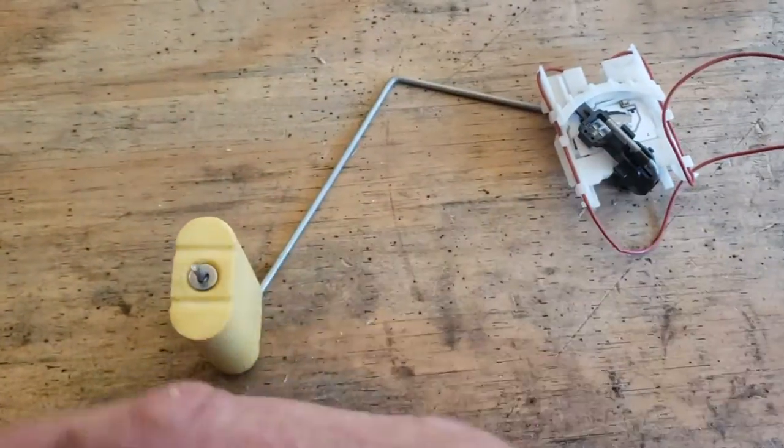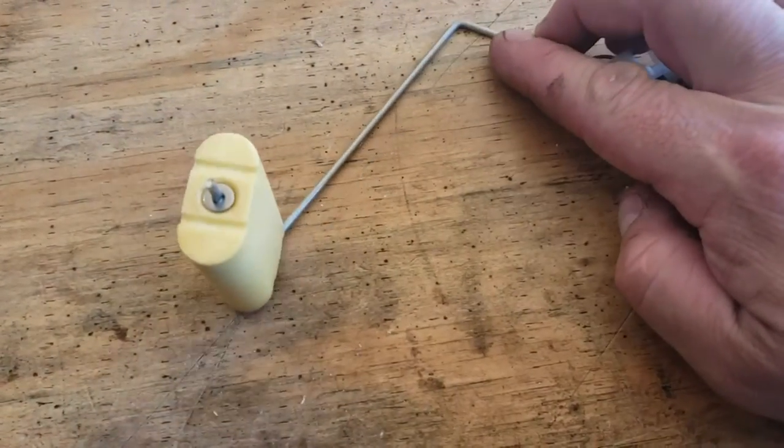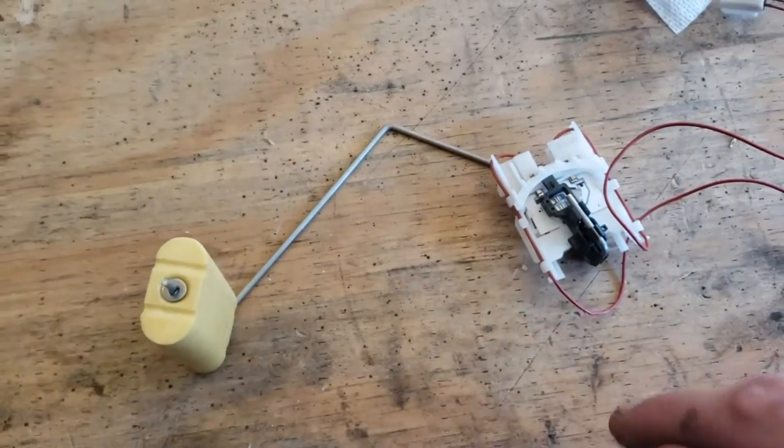But if this is rotated 90 degrees, which could easily happen with the fuel sloshing back and forth, this arm is going to be slightly higher, so it's going to give you more fuel than what is in the tank. And that was one of my problems.